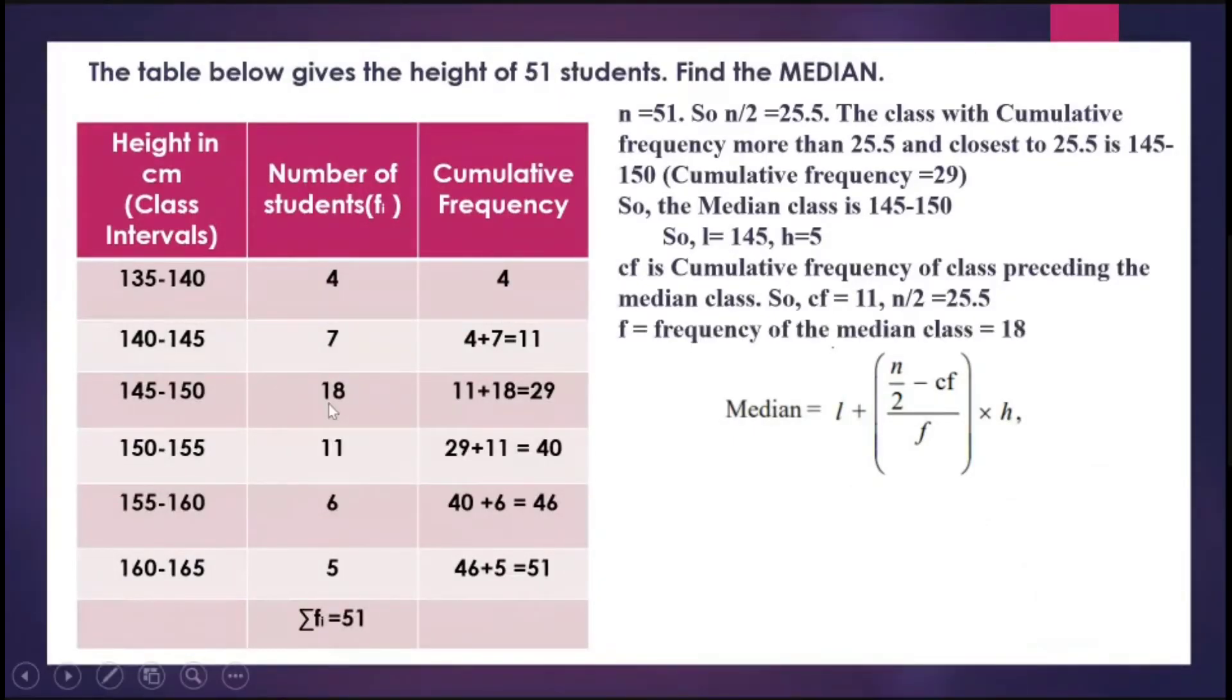I'll put these in the formula for the median. Median equals 145 plus 25.5 minus 11 upon 18 into 5. I get the value of the median as 145 plus 4.03, which is 149.03.